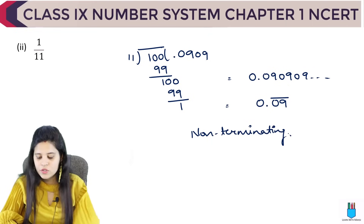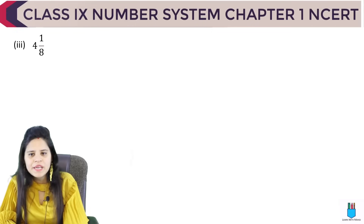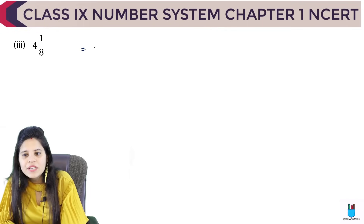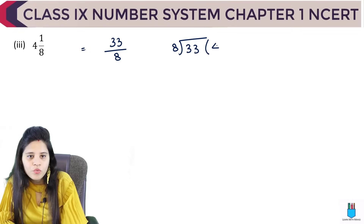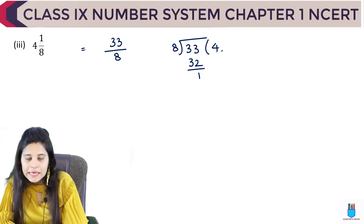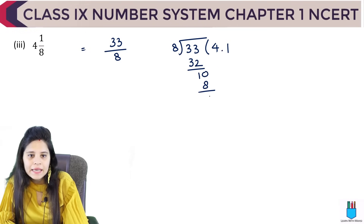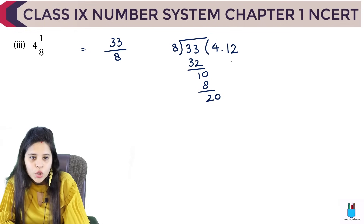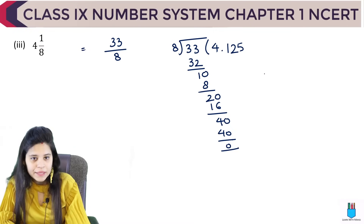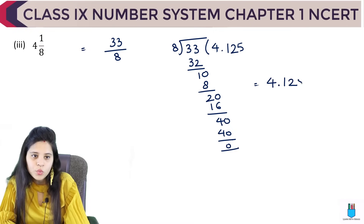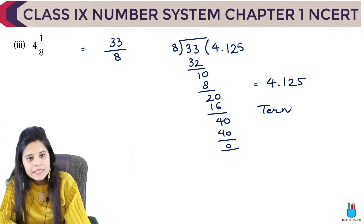Next we have 4 and 1 upon 8 — a mixed fraction. We convert it: 8 × 4 = 32, plus 1 = 33 upon 8. Now dividing 33 by 8: 8 × 4 = 32, remainder 1. Place the point, making 10; 8 × 1 = 8, remainder 2. Making 20; 8 × 2 = 16, remainder 4. Making 40; 8 × 5 = 40, remainder 0. So this is clearly terminating. The answer is 4.125.